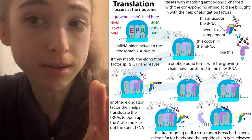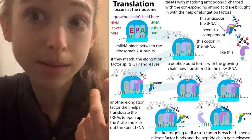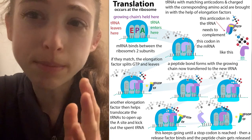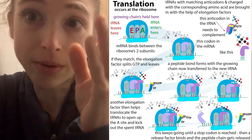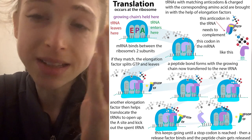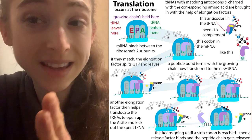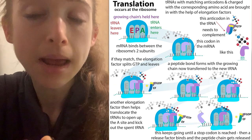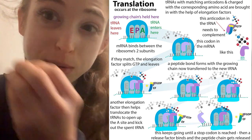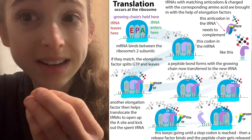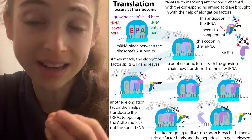The ribosome has three main sites — the E, the P, and the A. The P is the peptidyl site, where the growing chain is held. When a new tRNA comes and brings the next amino acid, it enters the A site — the arrival site or aminoacyl site — where that aminoacyl tRNA comes in holding the amino acid that needs to be added next.